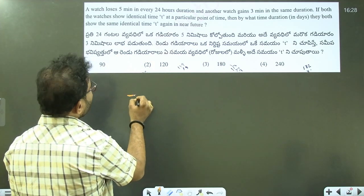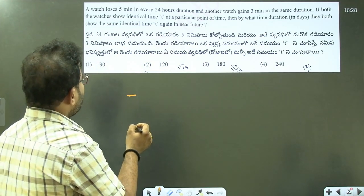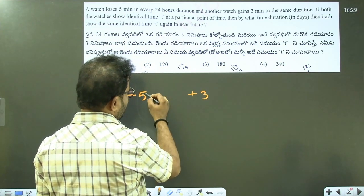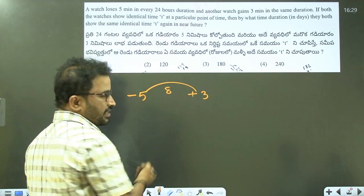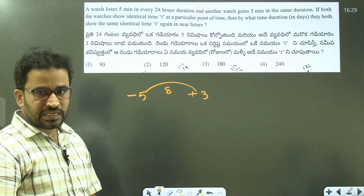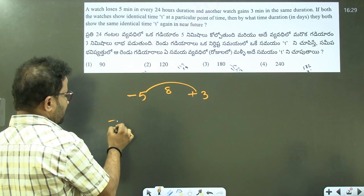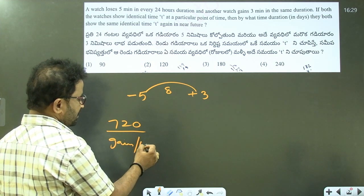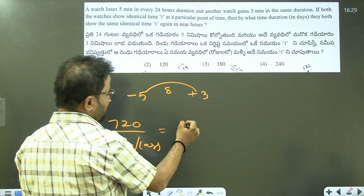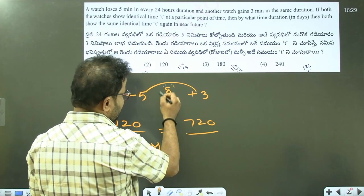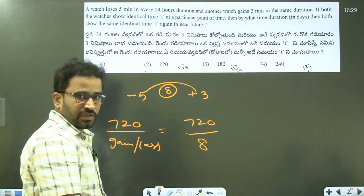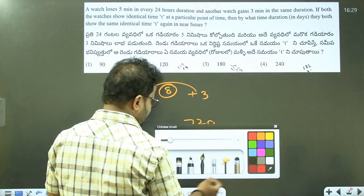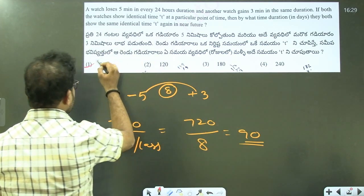If we observe, the first watch is 5 minutes slow, but the other is 3 minutes faster. So if you combine the gain and loss, minus 5 and plus 3 gives a total difference of 8 minutes. The answer is 90.